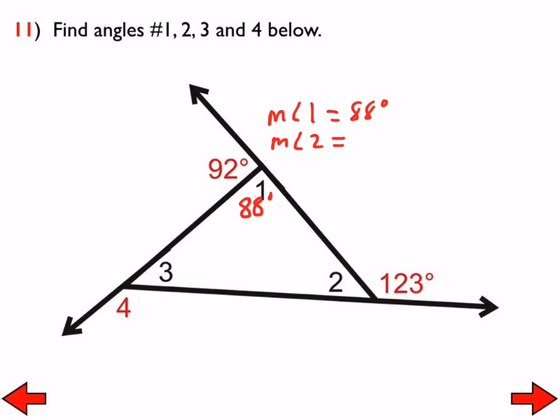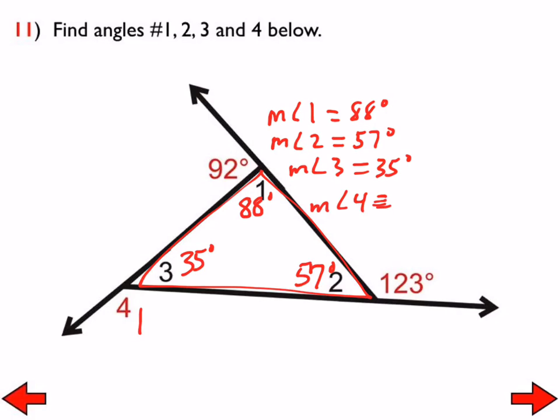The measure of angle 3, now we can use the triangle sum theorem because we have two of the three angles. 88 and 57 is 145, so that makes angle 3, 35 degrees. And then we have the measure of angle 4, which we can finally find now. We have a linear pair between angle 4 and the 35 degree angle, so that makes this 145 degrees. So the measure of angle 4 is 145 degrees. Any questions on number 11? All right, we are finished.